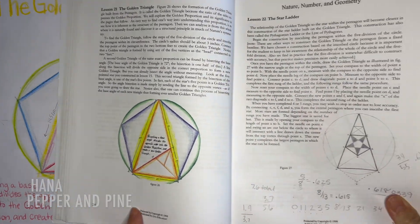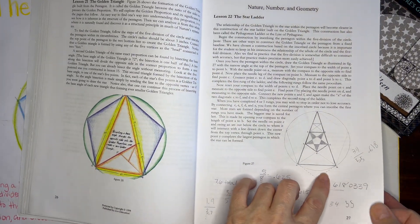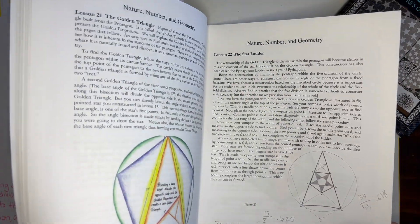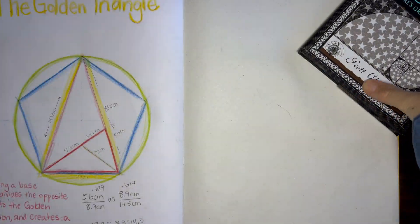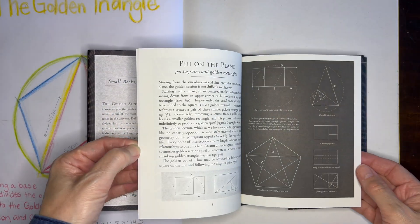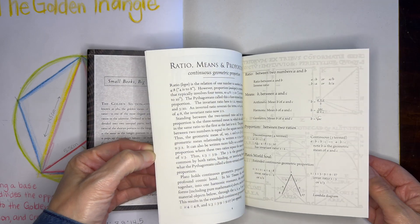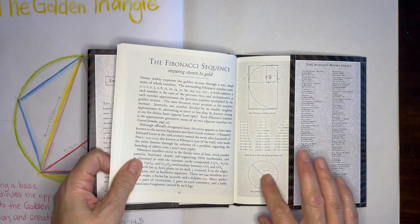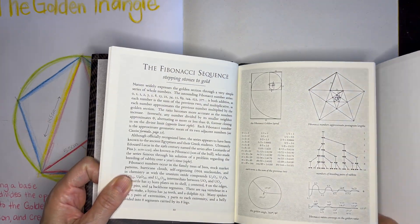We've been working through our geometry main lesson block with this curriculum by Live Education. Today we're going to depart from the curriculum momentarily from doing the golden section and golden triangle to doing the Fibonacci sequence using this book called The Golden Section, which has been a tremendous resource for this main lesson block.